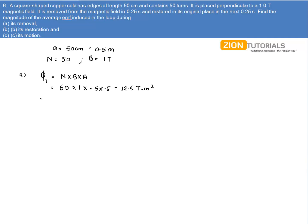This is the φ₁. φ₂, that is when the loop is completely outside the magnetic field, the flux will be obviously 0 because magnetic field is 0 over there.